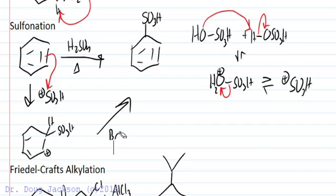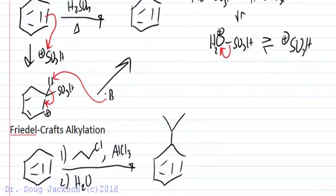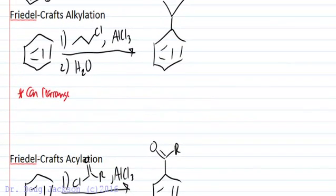Then again deprotonate to reform aromaticity in the ring and we get our substitution. Let's attach some carbon groups to the ring with the Friedel-Crafts reaction. The alkylation takes an alkyl chloride with aluminum chloride catalyst and water as a workup step. The only thing we have to remember is that these alkylations can rearrange if we try to form a primary or less stable carbocation. If we can form a more stable carbocation we must, and that happens when we form the electrophile in the first step.